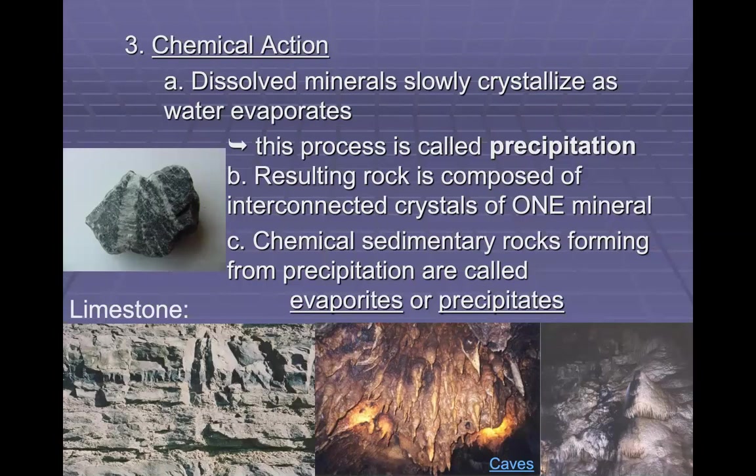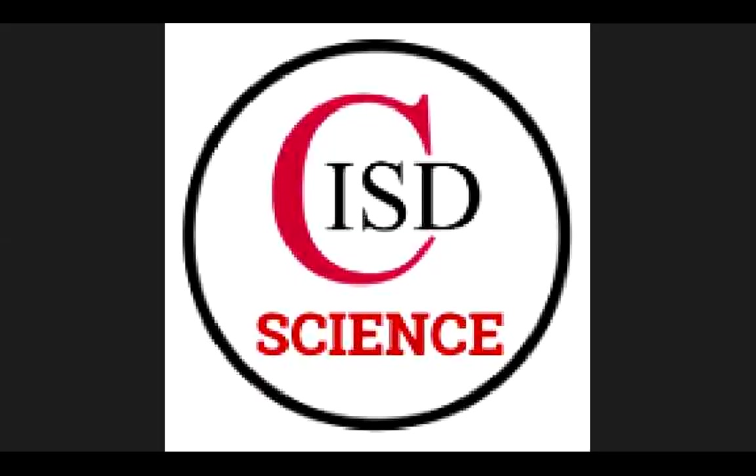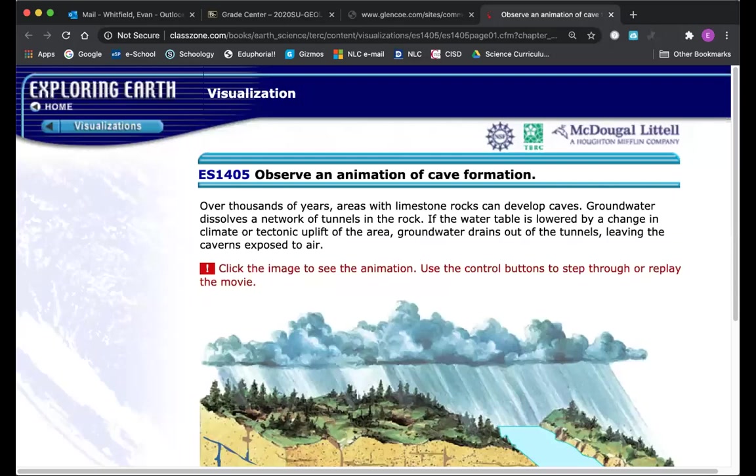Chemical action is another way to form a sedimentary rock. Here you don't really have sediments; you have pure mineral cement. Without the bits and pieces, the rock looks fairly boring, bland, or uniform in color — you may not see many crystals. A great example of chemically-formed sedimentary rock is a cave.